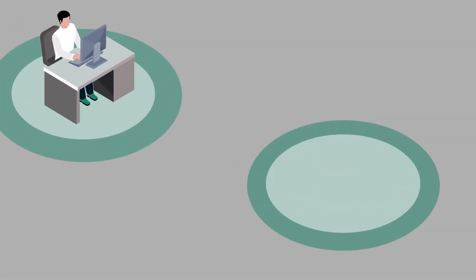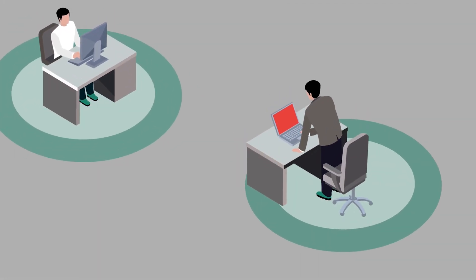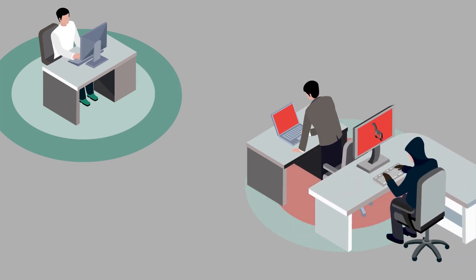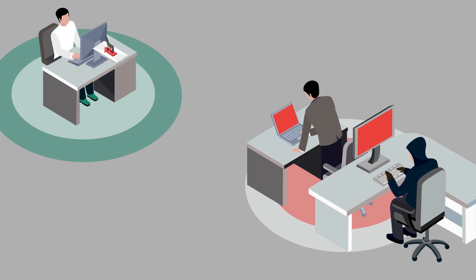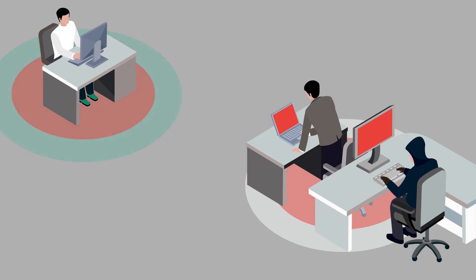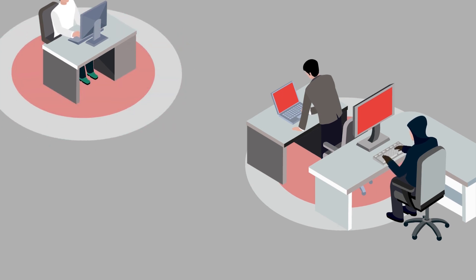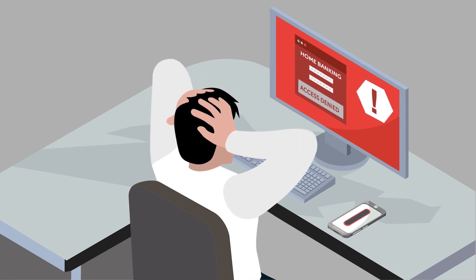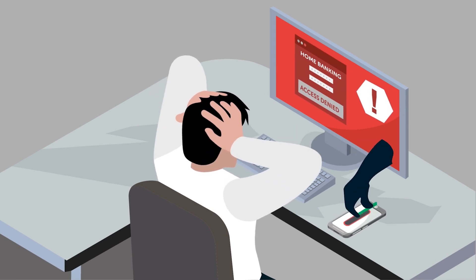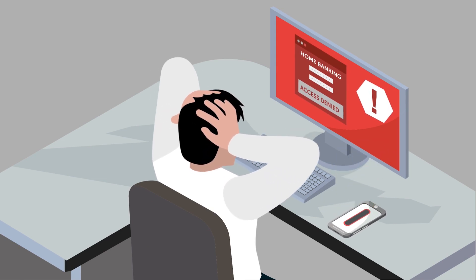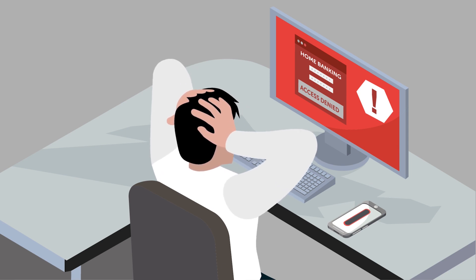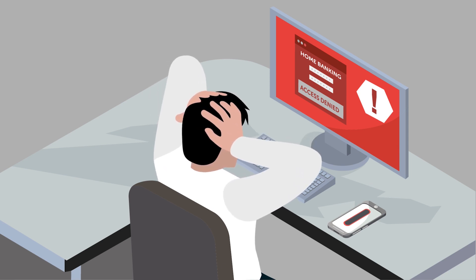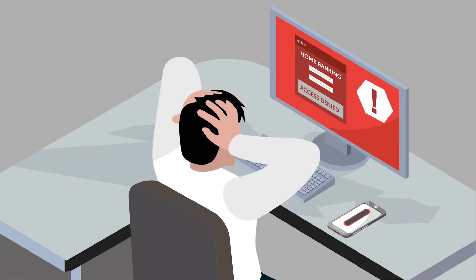If you click on a phishing email, it takes you to a fake official-looking bank website. When you log in, your details go to the hacker. The hacker can then change your password. That's how a phishing attack works.